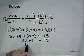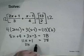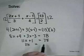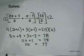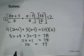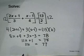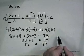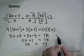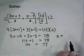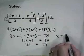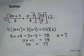Then 11x equals 77. Dividing both sides by 11 will give us our answer: x equals 7.